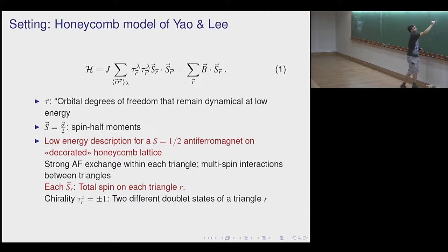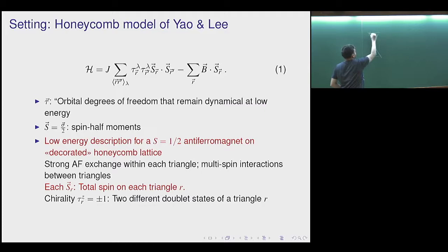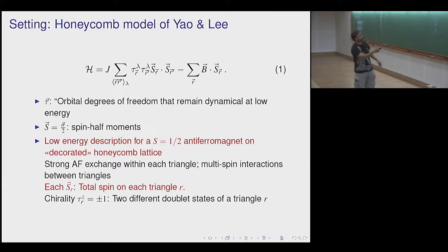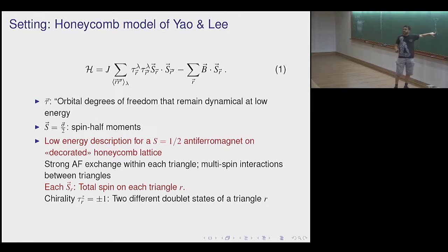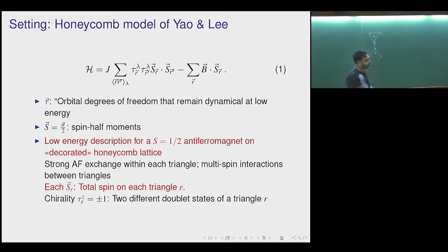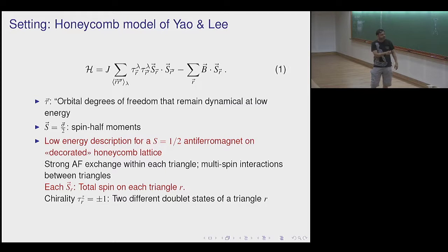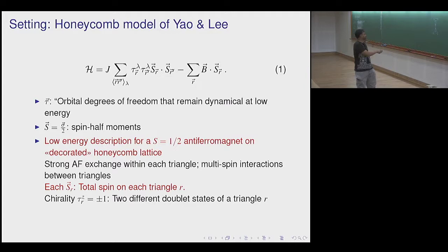The degrees of freedom live at the vertices of these triangles. There are multi-spin couplings in the exact solvable model which in the low-energy limit cause each triangle to form a doublet. There are two doublets per triangle because there are two total-spin-1/2 states for three spin-1/2 variables, distinguished by an orbital quantum number τ with its own Pauli matrix. So τ_z = ±1 labels the two possible S_total = 1/2 states of each triangle.